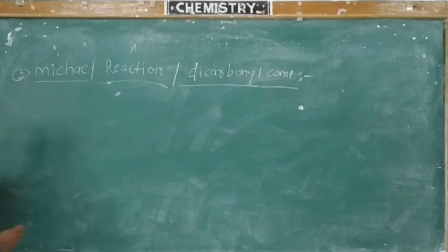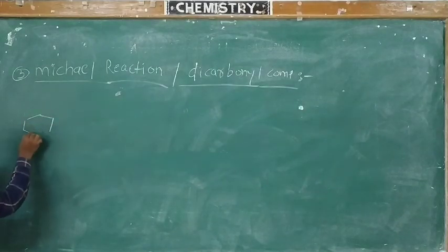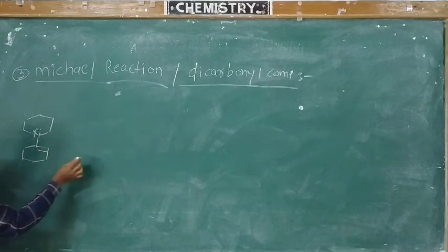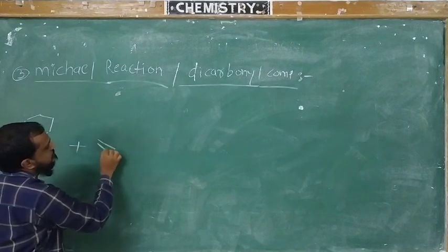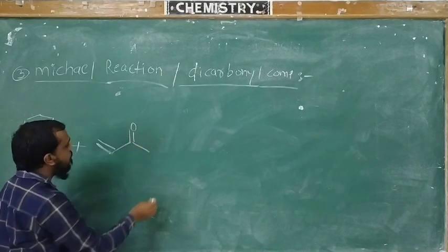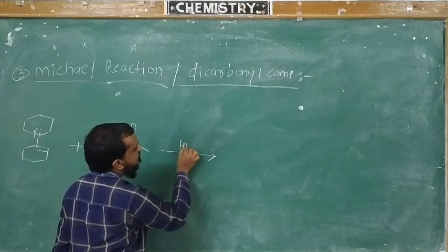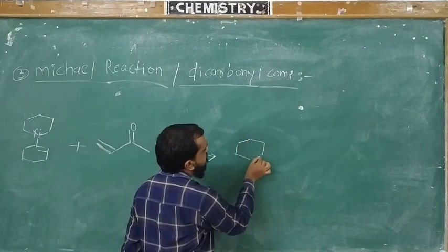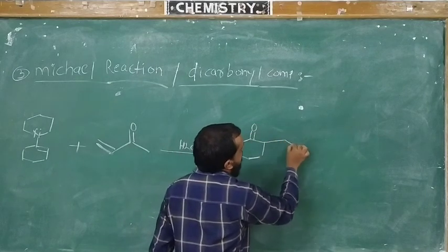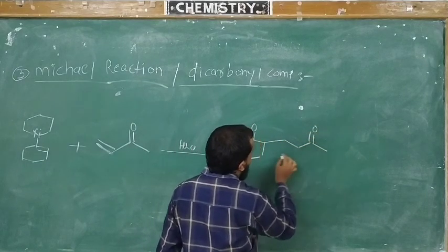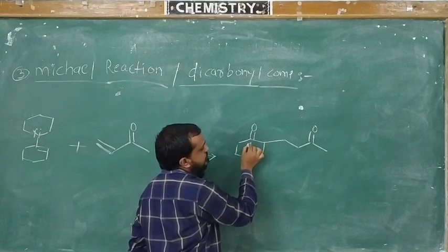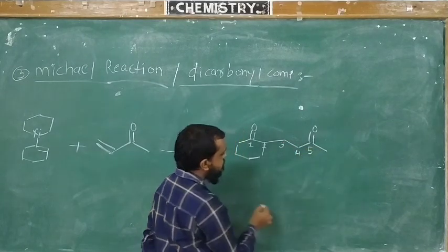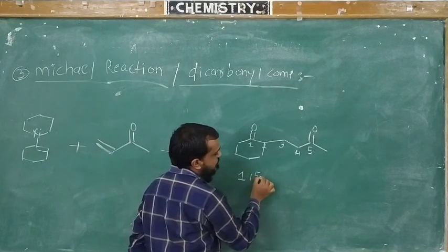In Michael reaction, enamine is treated with an alpha,beta-unsaturated compound, and we will get a dicarbonyl compound. The third application is the formation of a dicarbonyl compound, or Michael reaction. Look here — this is position one, second position, third position, fourth position, and fifth position. This is the 1,5-dicarbonyl compound.